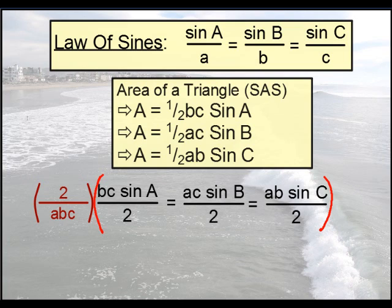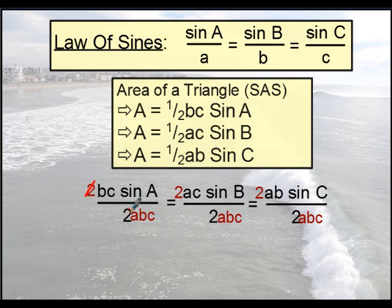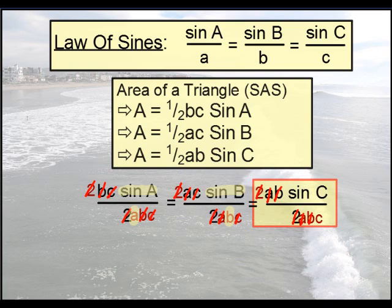And then what you do is, you multiply every single fraction by two over abc. So, essentially what it is, is you get this. And then what happens is a whole bunch of reductions. These two's go away, the b's go away, and the c's go away. When all the cancellations are done, notice what you're left with. And that's how we get our formula.